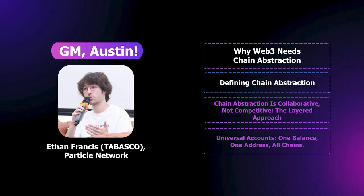What we're going to do today is take about 10 minutes to first talk about why Web3 needs chain abstraction. Then we're going to define chain abstraction, which I think is one of the major missing things at the moment — actually understanding what chain abstraction is with a formal definition and mental model around it. And then we're going to talk about the collaborative approach to chain abstraction, the non-competitive nature of the vertical, as well as what we're building to do this at Particle Network.